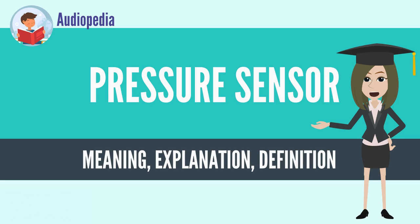Pressure sensors are used for control and monitoring in thousands of everyday applications. Pressure sensors can also be used to indirectly measure other variables such as fluid/gas flow, speed, water level, and altitude.